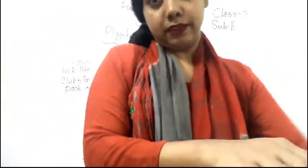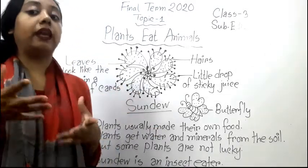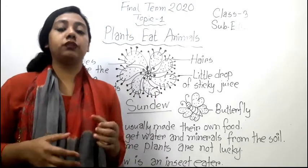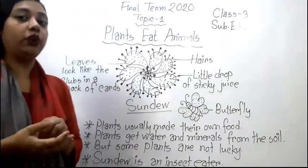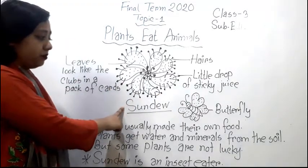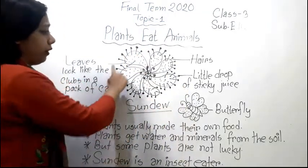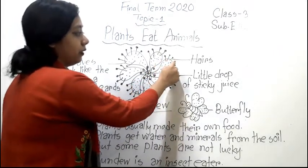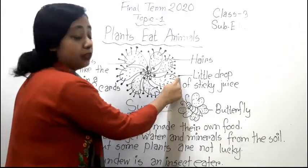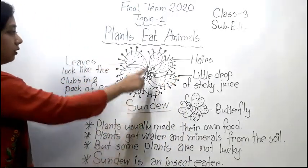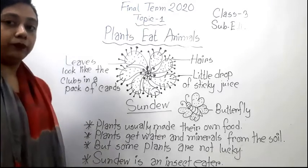So what have we learned from this part of the story? Plants usually make their own food by getting water and minerals from the soil. But in some places the soil is not good, so those plants have to eat insects. The sundew is an insect-eating plant. Its leaves look beautiful and have hairs, with a little drop of sticky juice at the end of each hair.